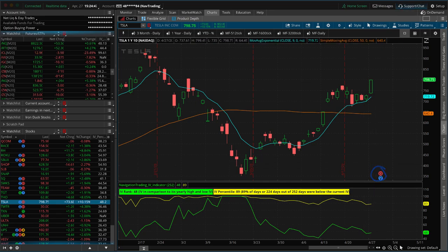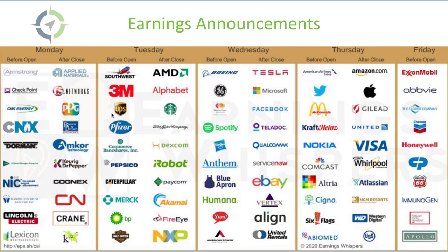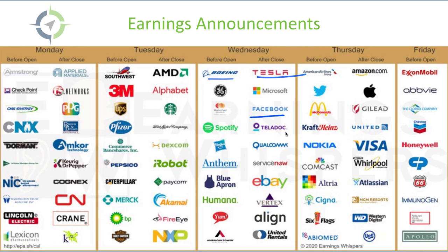Speaking of earnings, let's look at what's coming this week — it's all about oil and airlines. Nothing major today on Monday. Tomorrow we've got Southwest and BP. Wednesday brings Boeing, Tesla, Facebook, eBay, and some other tech. Then Twitter, Apple, and Amazon on Thursday — a lot of tech companies. And on Friday, another big oil day with Exxon, Chevron, and Phillips 66.